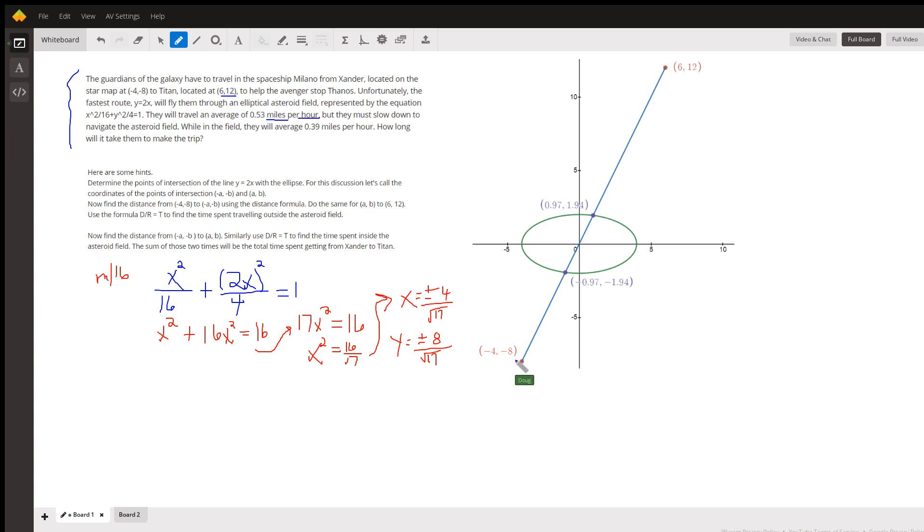Okay, so the first thing I said was let's determine the points of intersection of y = 2x with the ellipse. So here I have substituted 2x for y in the equation of the ellipse, and now I want to solve this equation for x so I can find these two points of intersection.